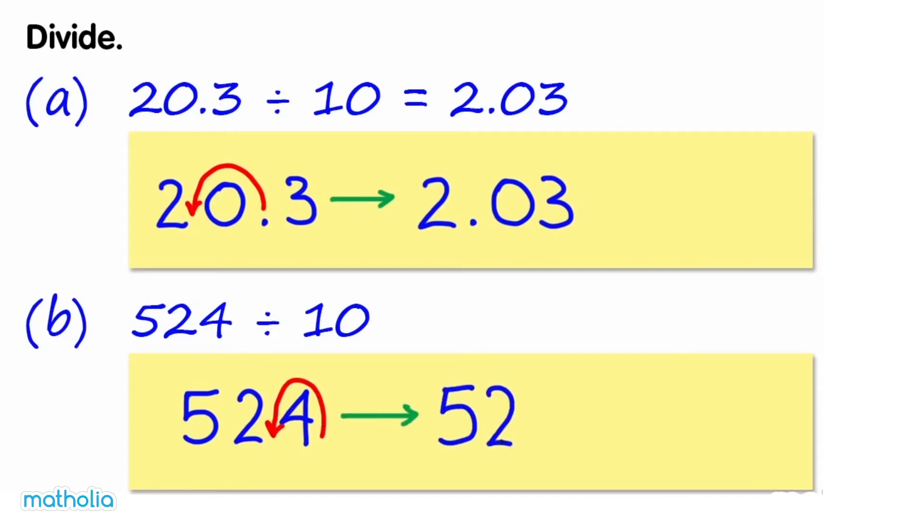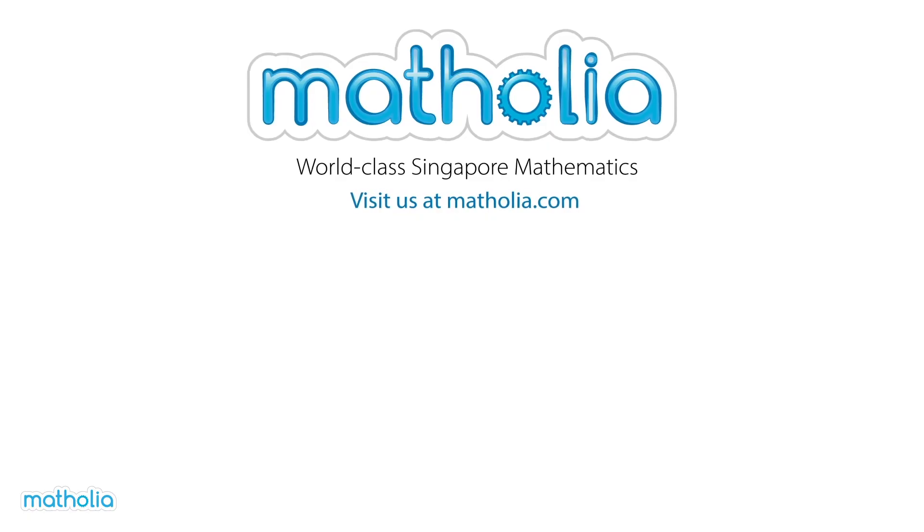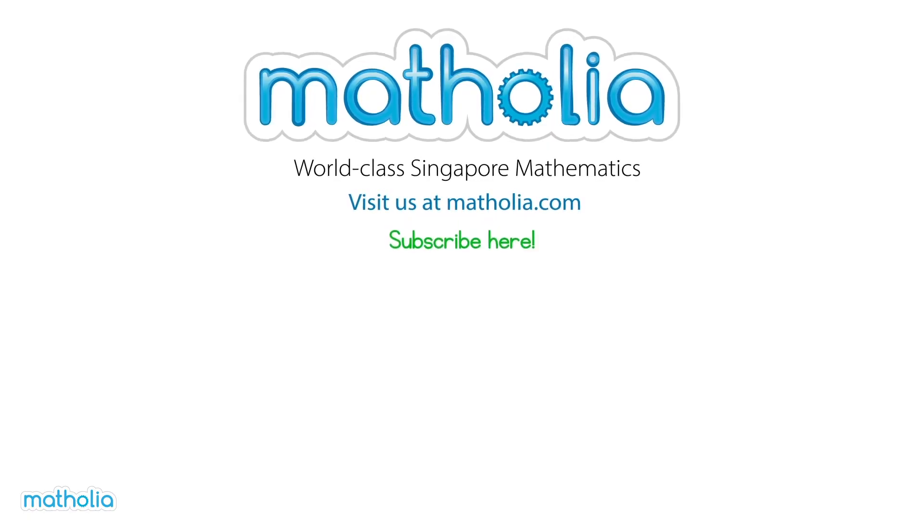gives 52.4, so 524 divided by 10 equals 52.4. Don't forget to subscribe.